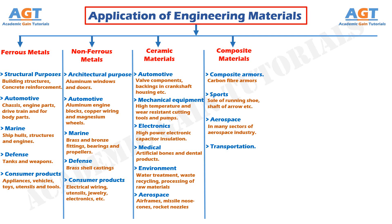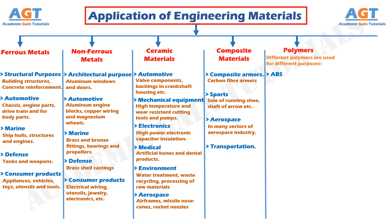The polymers, which are an organic class of materials, are of different types, and different polymers are used for different purposes. ABS is a type of polymer material used in refrigerator lining, garden equipment, toys, and highway safety devices.